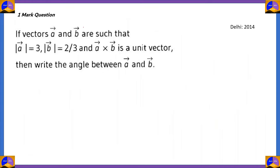Let's look at our second question. If vectors a and b are such that modulus of vector a is 3, modulus of vector b is 2/3, and vector a cross vector b is a unit vector, then write the angle between vector a and vector b.